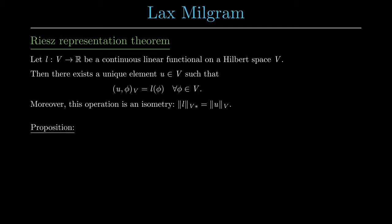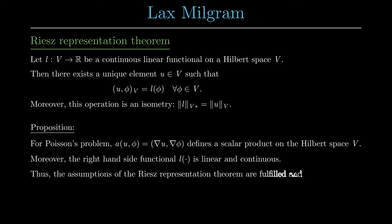The Riesz representation theorem gives us now a unique solution to the Poisson problem. The bilinear form in Poisson's problem is given by a(u,φ) equals the L² scalar product of gradient u and gradient φ. This bilinear form defines a scalar product and the right-hand side functional l is linear and continuous. Thus, by the Riesz representation theorem, we have a unique solution u in V to the Poisson problem.